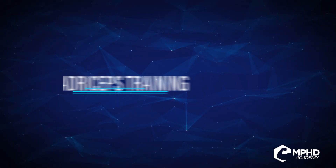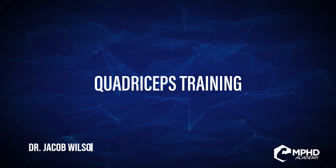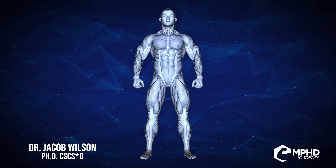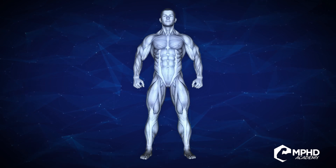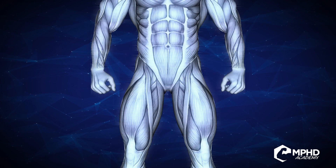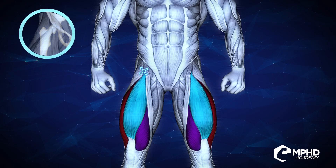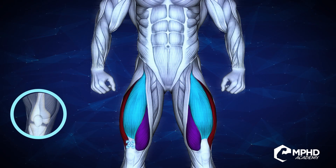Welcome everyone to quadriceps training part one. We're going to introduce quadriceps anatomy. The first thing you need to understand is, as the name quadriceps suggests, we have four parts to the muscle. They all originate on the hip and thigh, and they insert onto your kneecap or patella.